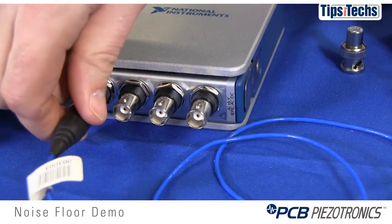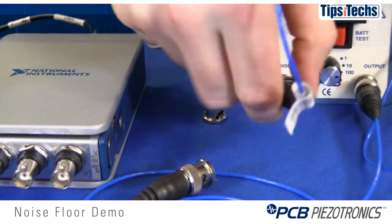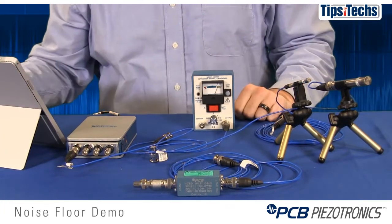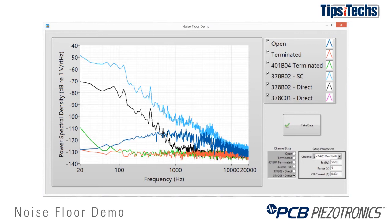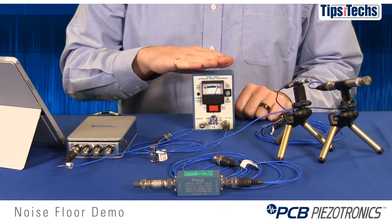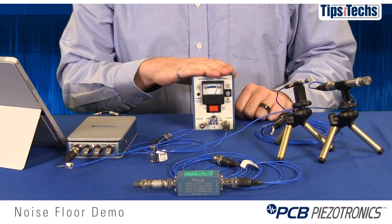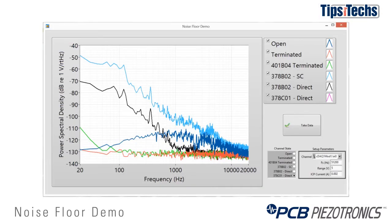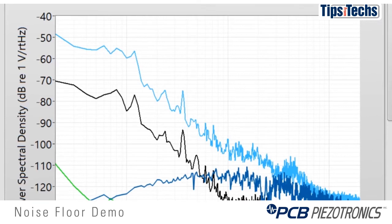The next thing we can do is bypass the external signal conditioner and power the microphone directly from the data acquisition system, which is often done in industry to cut down on the number of pieces used. When we do this, we see that the noise floor below 1 kHz is dominated by the acoustic noise, but above 1 kHz the noise floor is dominated by electronic noise. You may ask why this curve is 20 dB lower than the last curve — the reason is that the signal conditioner was set to times 10 gain. If we want to make measurements of the background noise in this room in the 1,000 to 10,000 Hz range, we need to amplify the microphone signal before it gets into the data acquisition system, and that's what you see between the light blue curve and the black curve.